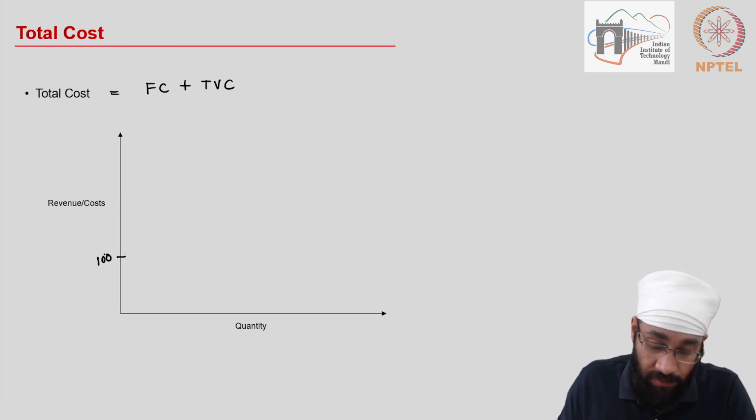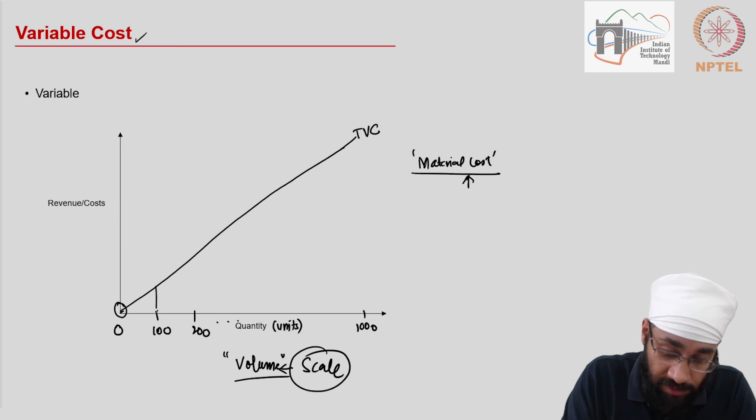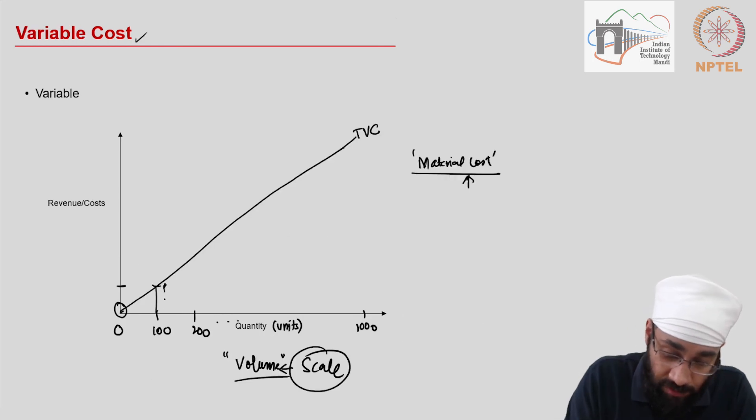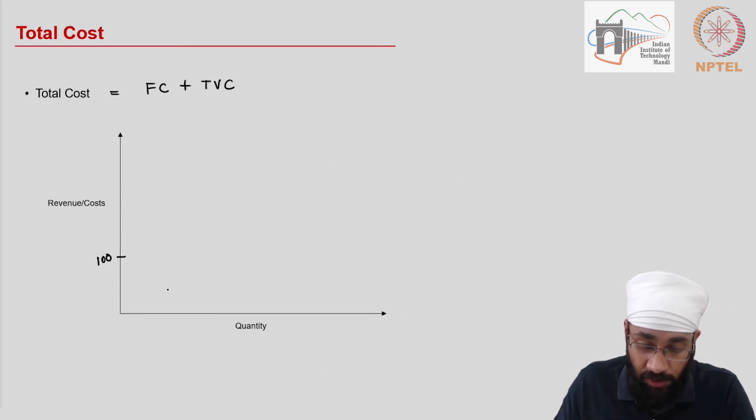And if you want to produce 100 units, then you have some more cost but the fixed cost is still 100. So 100 you still have to bear, plus this much cost and you have to add to it this variable cost which will give me this minimum and some variable. So this is the cost.